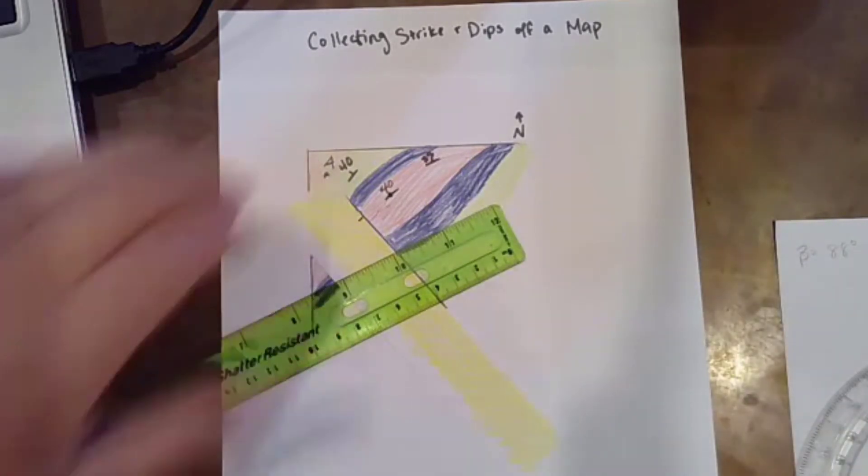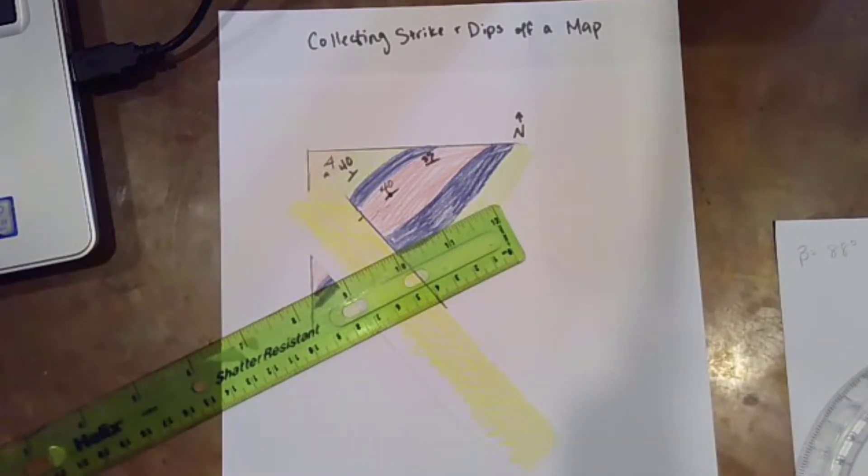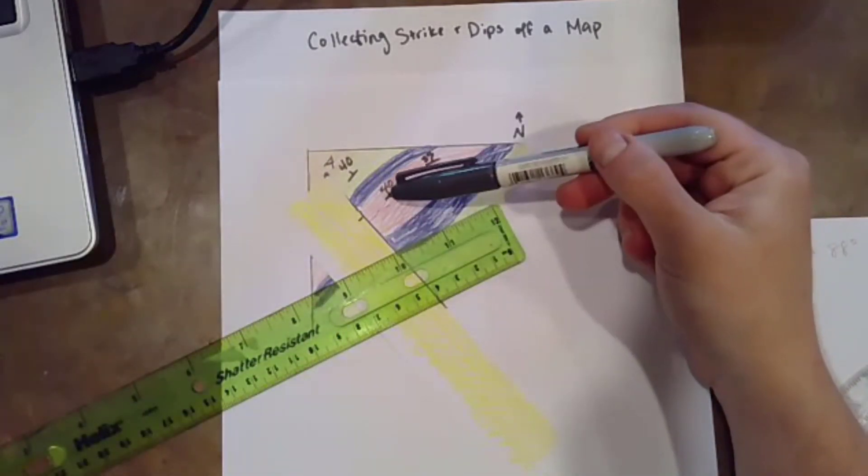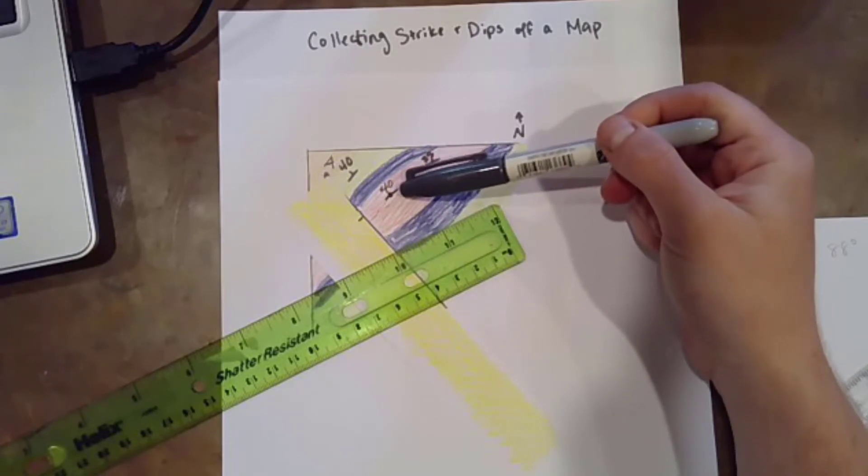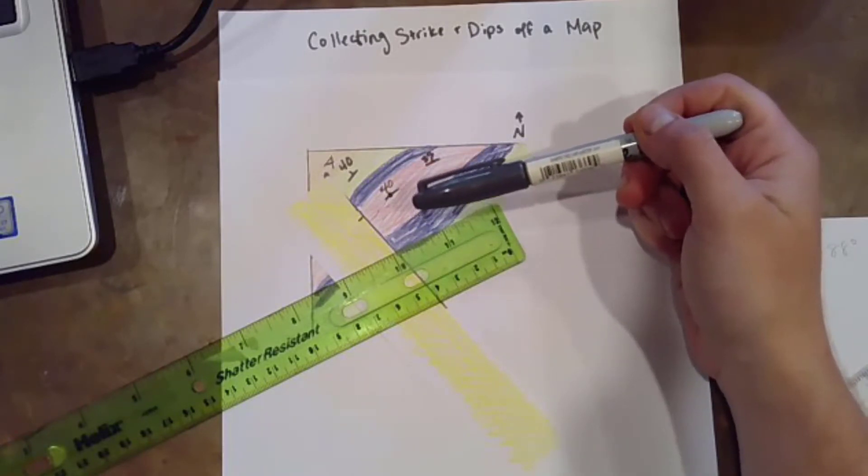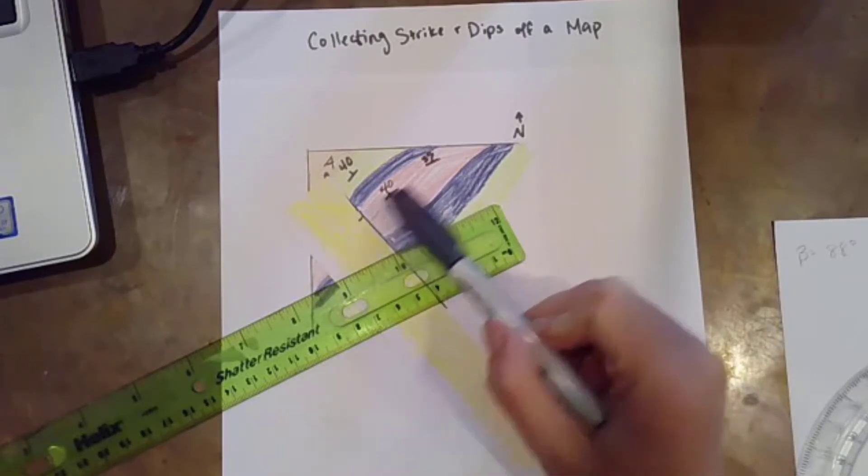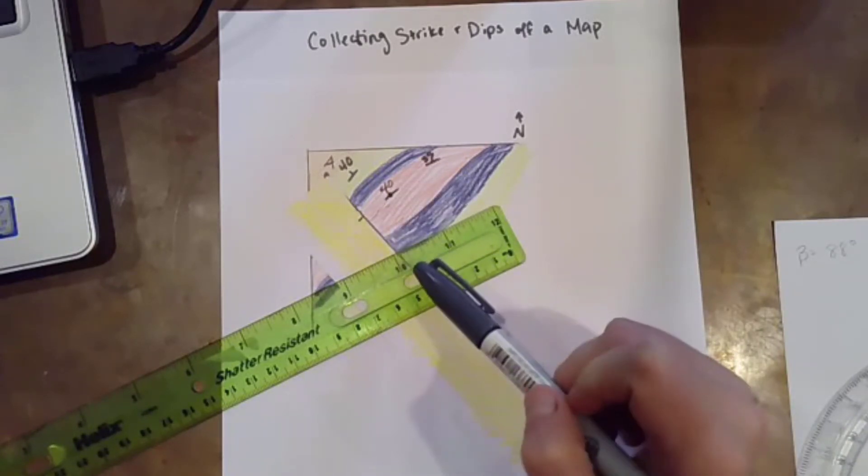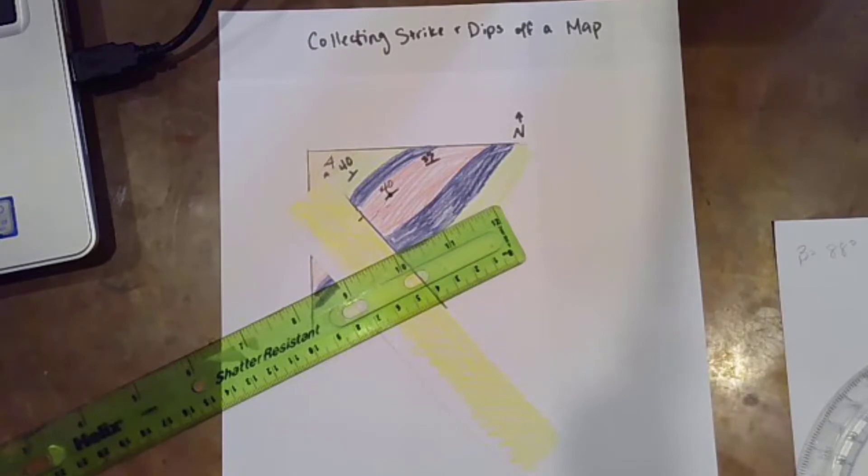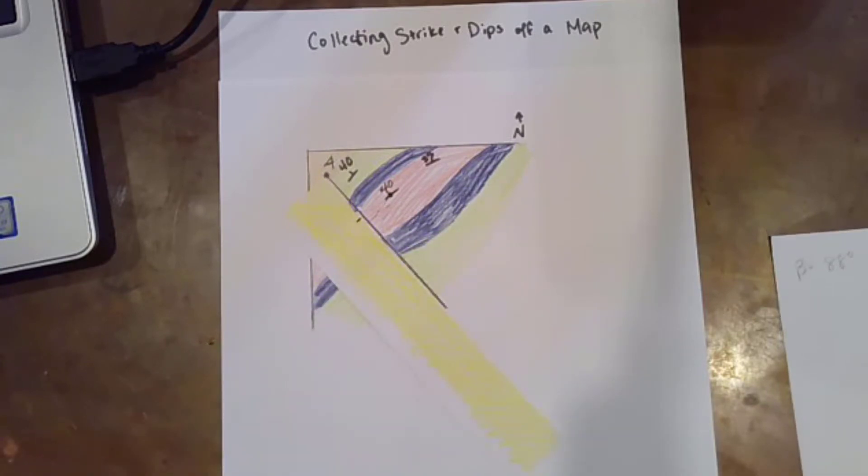But unless that strike and dip measurement is perfectly perpendicular, so unless the strike associated with this is perfectly perpendicular to the line along which I'm constructing my cross section, I'm going to have to adjust it. I'm going to have to calculate the apparent dip instead of this value, which is the true dip. So the way that you're going to do that is you're going to take, I'm going to remove my yellow sheet of paper for a second.